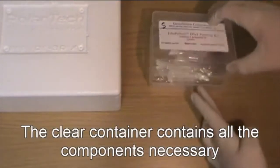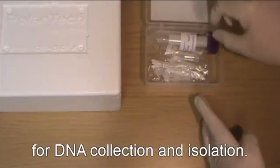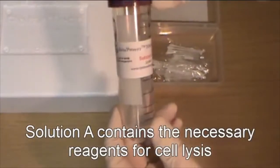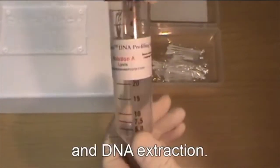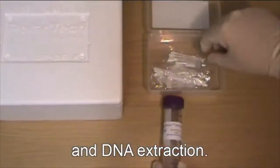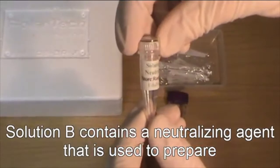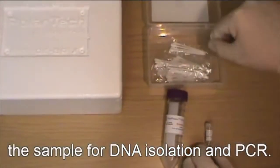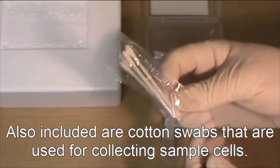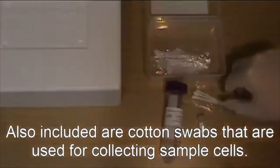The clear container contains all the components necessary for DNA collection and isolation. Solution A contains the necessary reagents for cell lysis and DNA extraction. Solution B contains a neutralizing agent that is used to prepare the sample for DNA isolation and PCR. Also included are cotton swabs that are used for collecting sample cells.